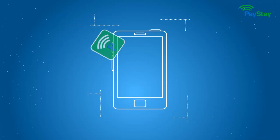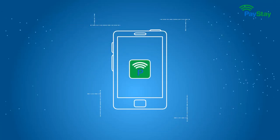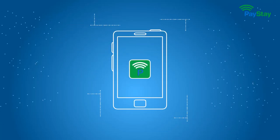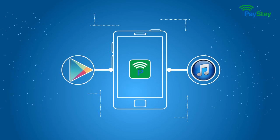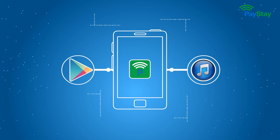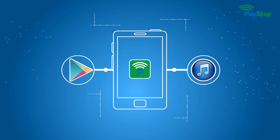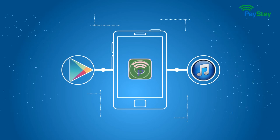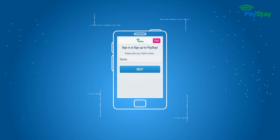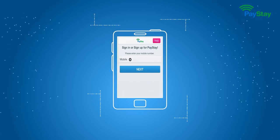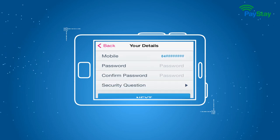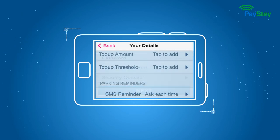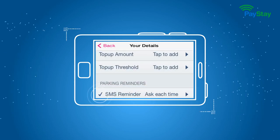Paying for parking with PayStay is easy. First, install the app via iTunes or Google Play. Once installed, tap the icon. Follow the prompt for your mobile number, then enter your personal details and select your SMS reminder preference.